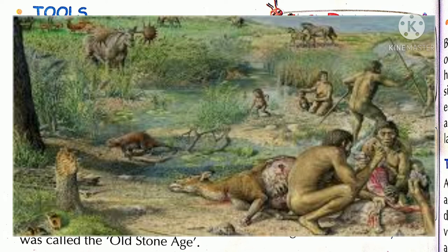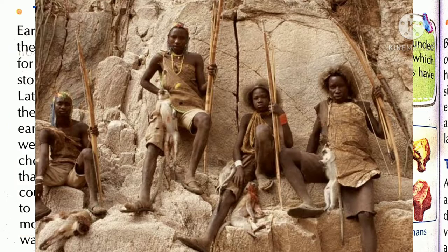Adi manov kahaan rhetay thay? Jungle mein rhetay thay — picture mein dekhiye, they jungle mein rhetay thay. And they eat what? Meat. Animals ko maartay thay aur meat eat karte thay.